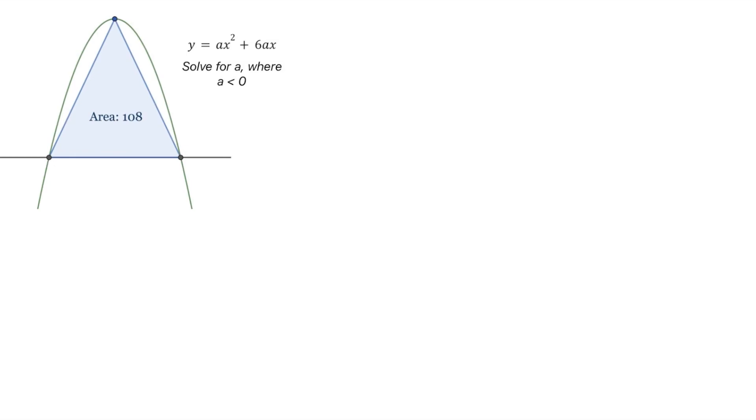First, we'll take our equation and set it to 0. So this will be ax squared plus 6ax equals 0. Next, we can factor out an ax from the left hand side. So in the brackets we would have x plus 6, and this equals 0.